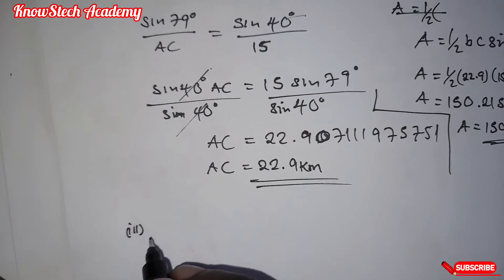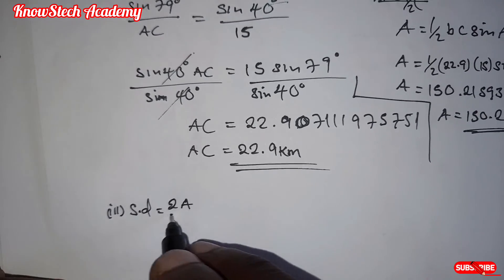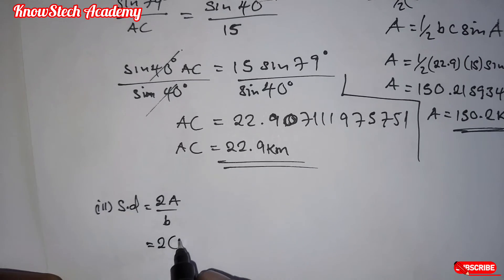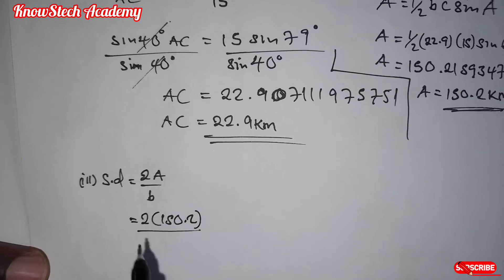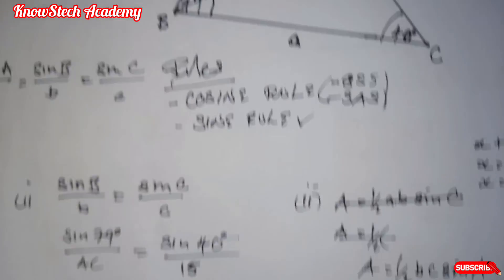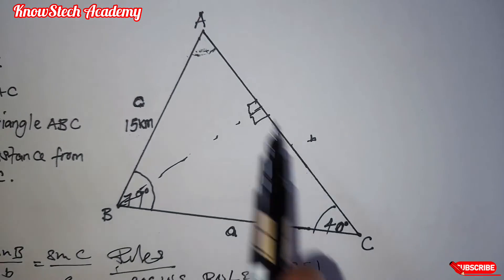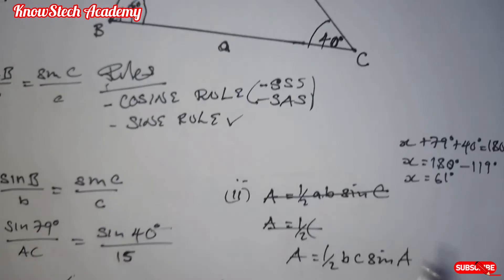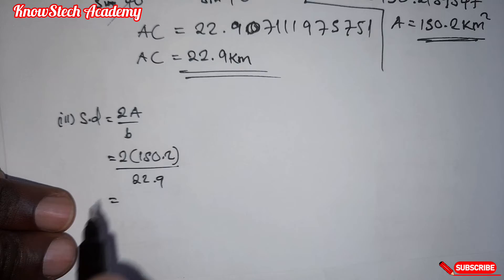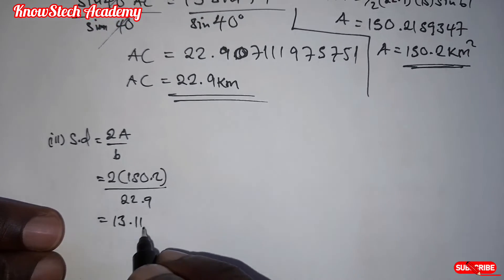Shortest distance SD is equal to two times area divided by the base. So two times area is 150.2, then the base, which is AC, is 22.9. So when you calculate here, you're going to find 13.11111790393.